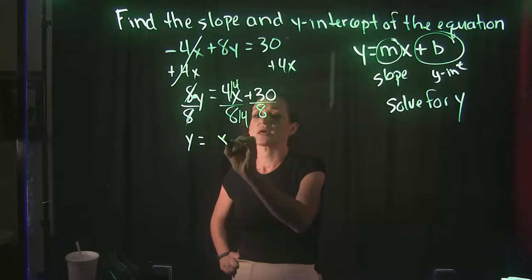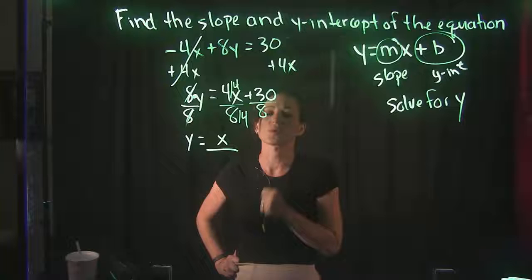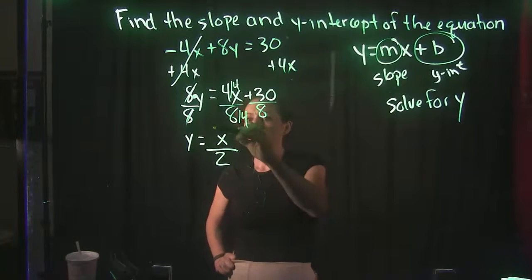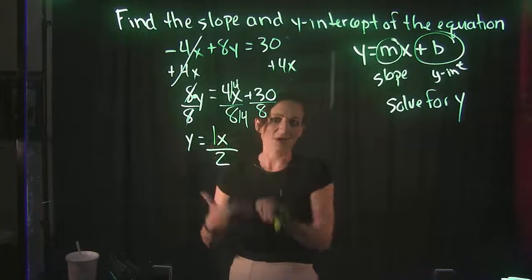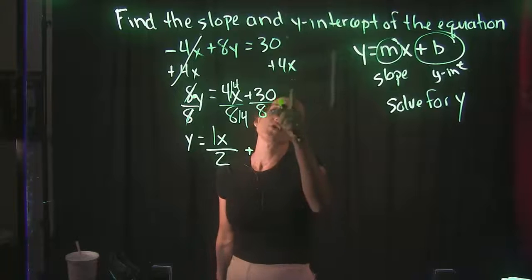4 divided by 4 cancels out to a 1. So 1x is just x. We don't have to write the 1. 8 divided by 4 is a 2. So that's typically like saying a 1/2 x is what we have there.